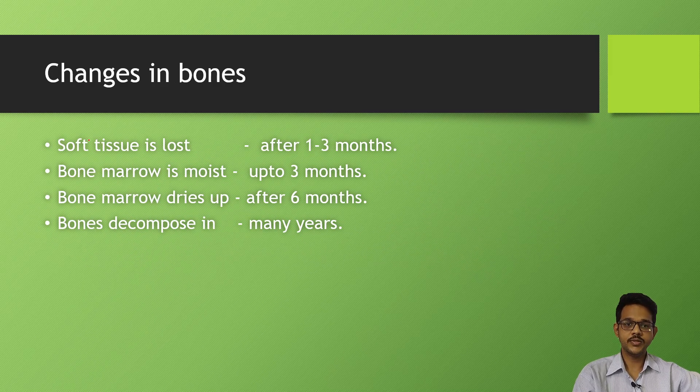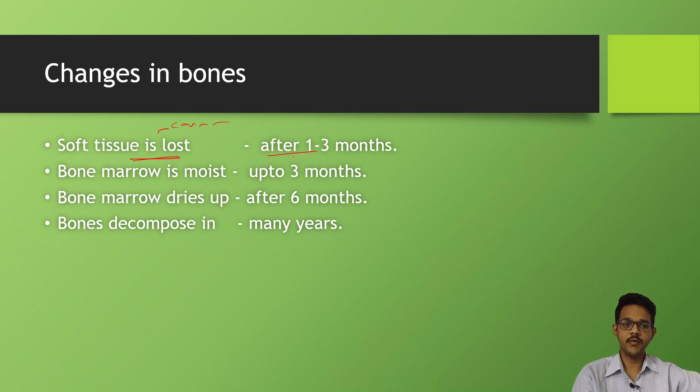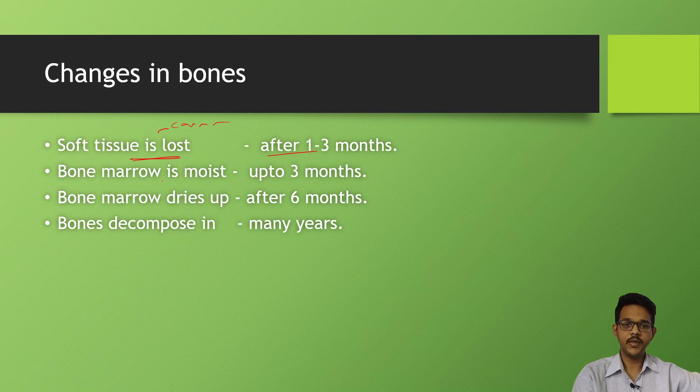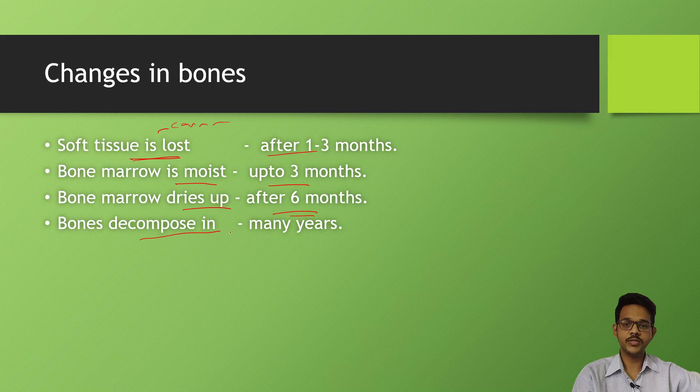Changes in bones: If the body is skeletonized and soft tissues are present - cartilage present on the bone surface - it indicates after one to three months. If bone marrow is moist inside the bone, it takes up to three months. If bone marrow is dried up from the long bones, it is more than six months. Bones decompose in many years - completely decomposed in many years.